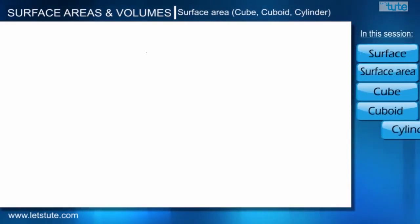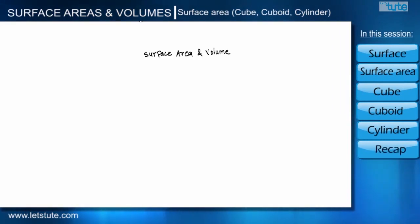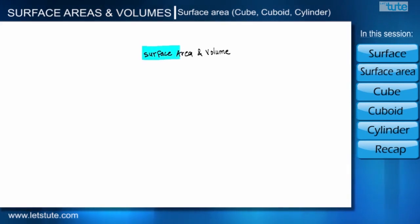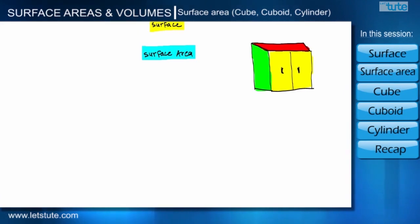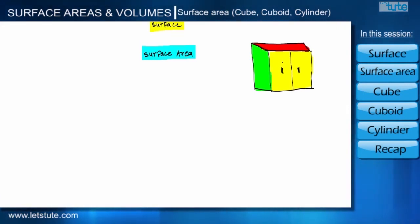Hello everyone, we are going to study about surface area and volume, but in this session we are only going to discuss about surface area. Before going into details, let us see what is surface. Suppose we have a cupboard and we want to paint this cupboard from outside — the total portion of this cupboard which we can paint from outside is the surface of this cupboard.